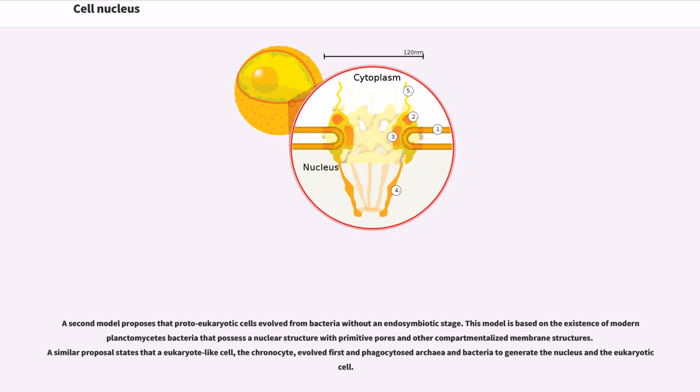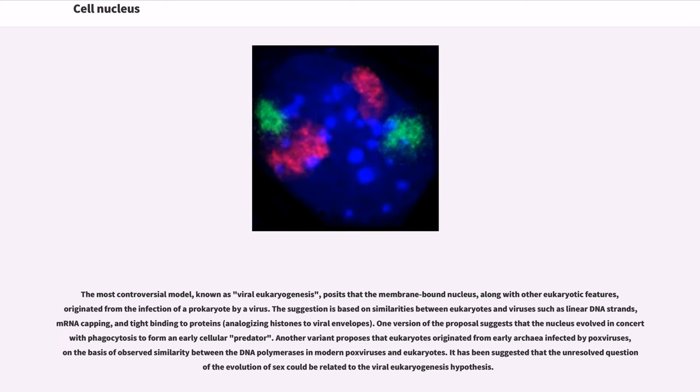A second model proposes that proto-eukaryotic cells evolved from bacteria without an endosymbiotic stage. This model is based on the existence of modern planctomycetes bacteria that possess a nuclear structure with primitive pores and other compartmentalized membrane structures. A similar proposal states that a eukaryote-like cell, the chronocyte, evolved first and phagocytosed archaea and bacteria to generate the nucleus in the eukaryotic cell. The most controversial model, known as viral eukaryogenesis, posits that the membrane-bound nucleus, along with other eukaryotic features, originated from the infection of a prokaryote by a virus. The suggestion is based on similarities between eukaryotes and viruses such as linear DNA strands, mRNA capping, and tight binding to proteins, analogizing histones to viral envelopes. One version of the proposal suggests that the nucleus evolved in concert with phagocytosis to form an early cellular predator. Another variant proposes that eukaryotes originated from early archaea infected by pox viruses, on the basis of observed similarity between the DNA polymerases in modern pox viruses and eukaryotes. It has been suggested that the unresolved question of the evolution of sex could be related to the viral eukaryogenesis hypothesis.